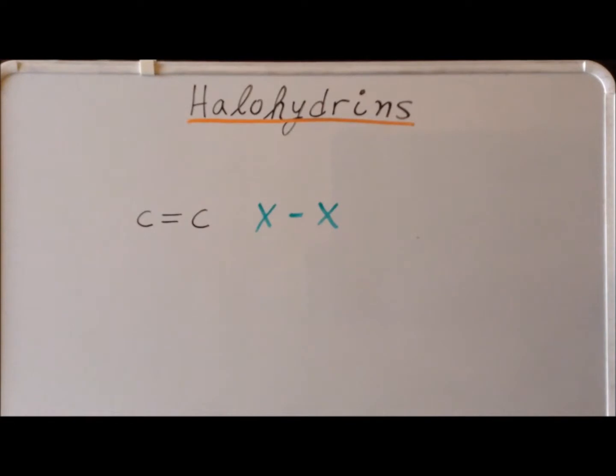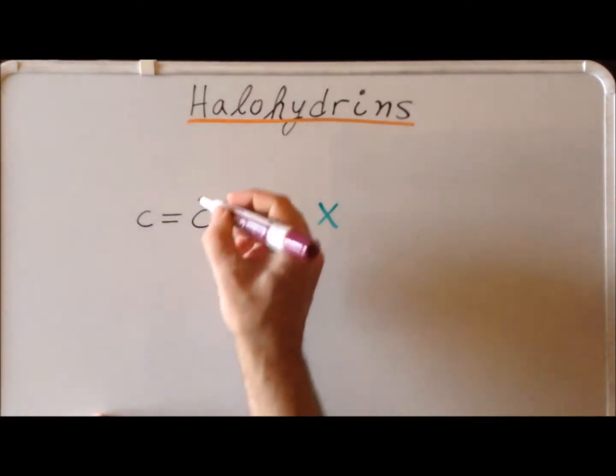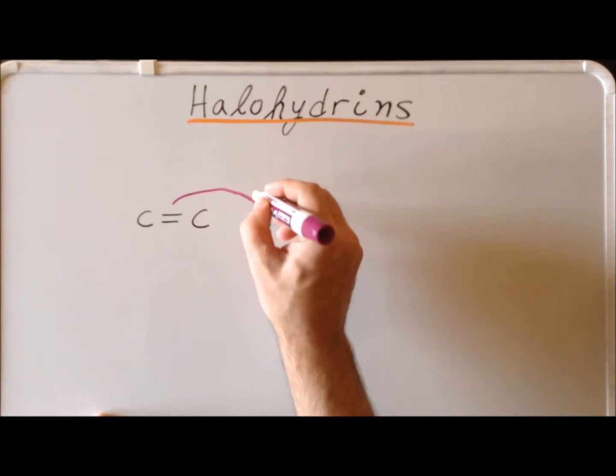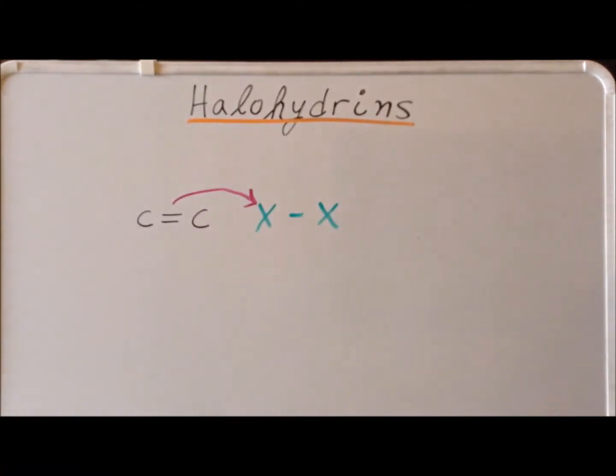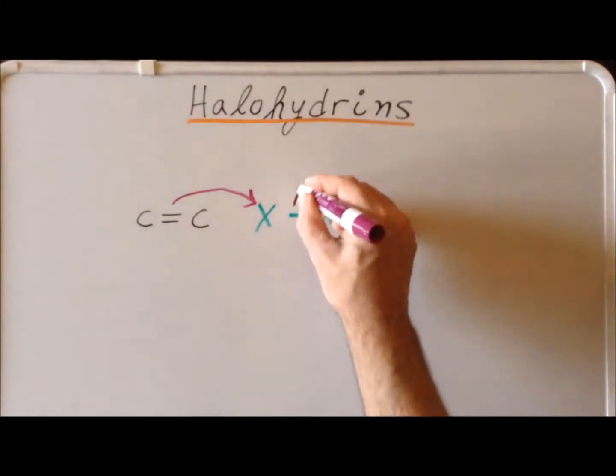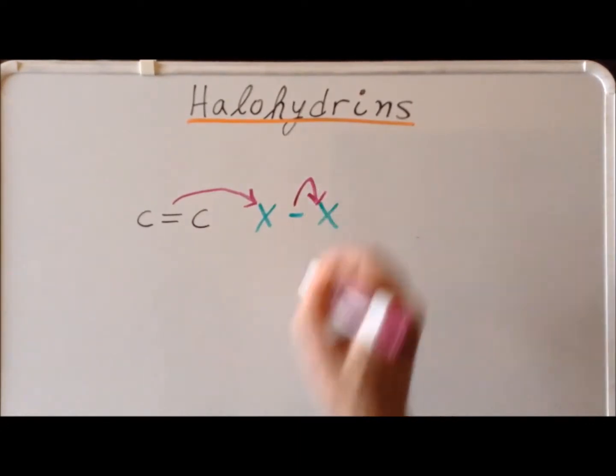To form a halohydrin, first we need an alkene. So we are using ethylene here as our simplest alkene. And we need our halogen, which will be either chlorine or bromine. The electron-rich double bond will attack one of the halogen atoms.